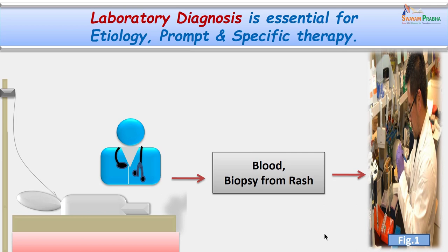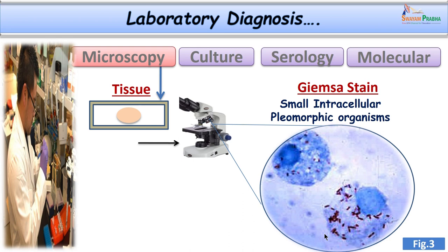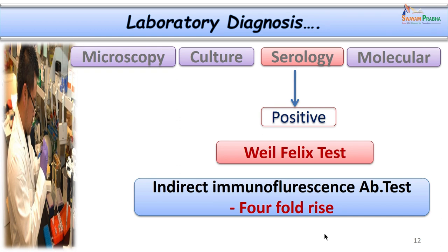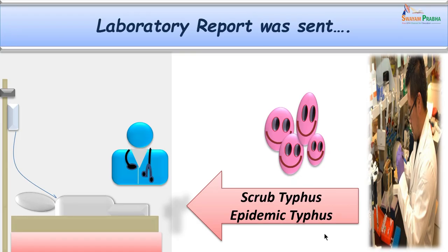In these two cases, blood as well as biopsy from the rash were collected. In case number 1 the boy had a scab and material was collected from there; from case number 2, tissue biopsy from the rash was collected and sent to the laboratory. Special stains like Giemsa and Gimenez stains were used — Gram stain is usually not done in such cases. The serological tests, including the Weil-Felix test and the indirect immunofluorescence test, both turned positive, confirming scrub typhus in case 1 and epidemic typhus in case 2.